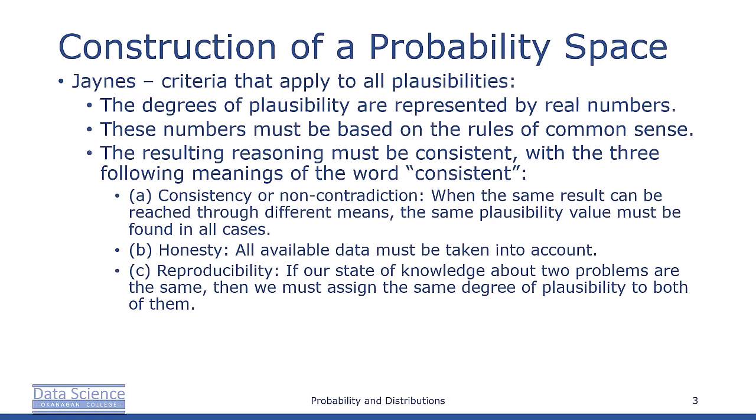The Cox-Jaynes theorem proves these plausibilities to be sufficient to define universal mathematical rules that apply to plausibility P, up to transformation by an arbitrary monotonic function.